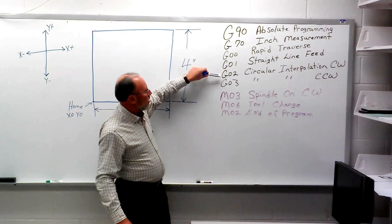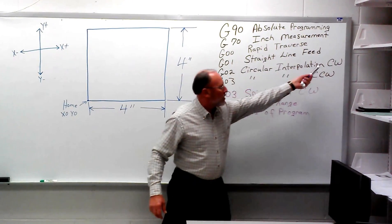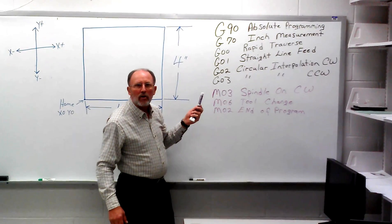A G02 and a G03, those are our circular feeds. The G02 is our clockwise direction, and our G03 is our counterclockwise direction.